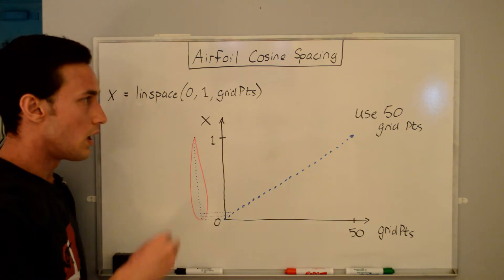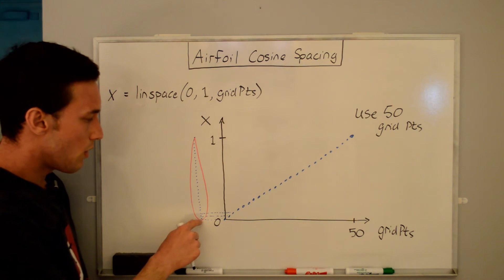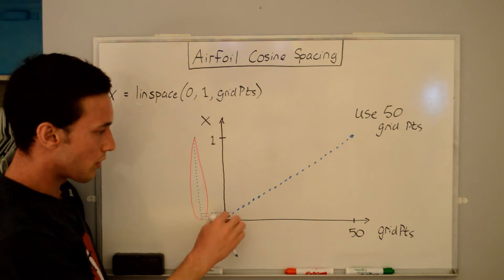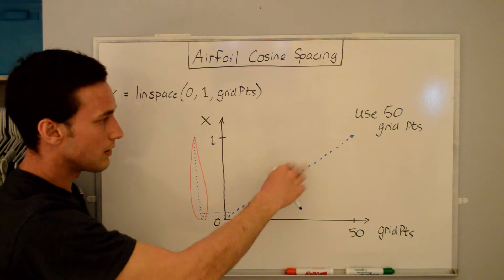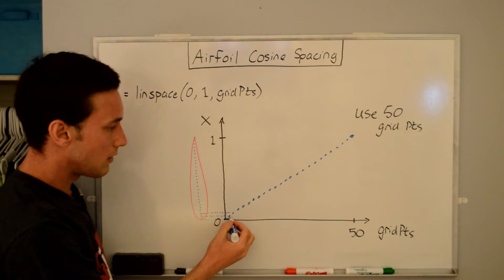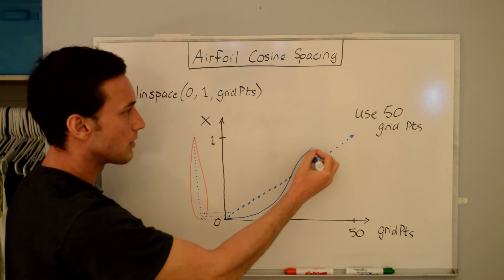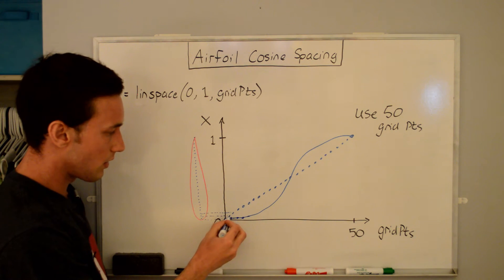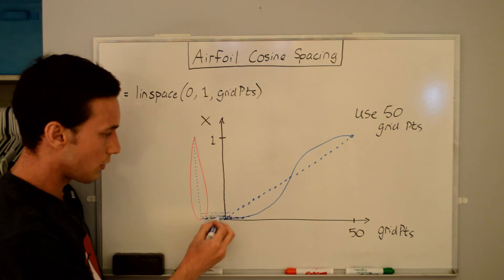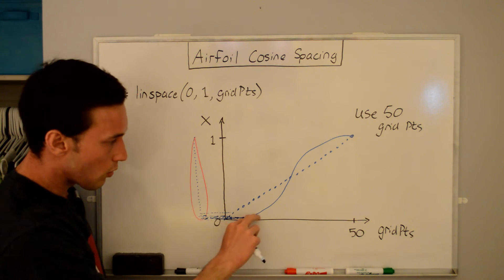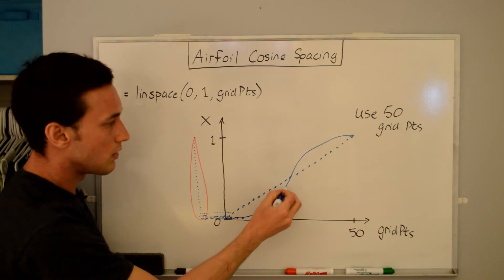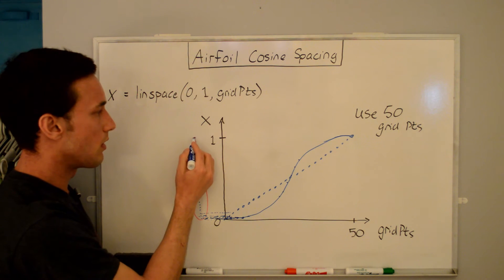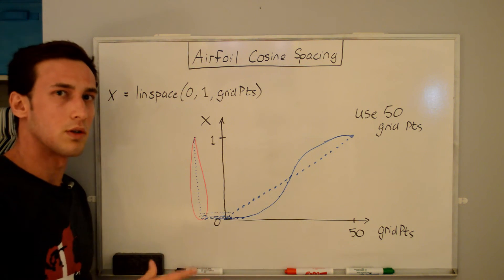Now let's change this for the non-uniform cosine spacing. If we want more points around the leading edge or trailing edge, we want something that looks like this: more data points down here and more data points up here, with fewer data points in the middle. So you have a distribution where data points are closer near the leading edge where the slope is lower, more widely spaced in the middle where the slope is high, and then denser again at the trailing edge. So let's break down the cosine spacing.